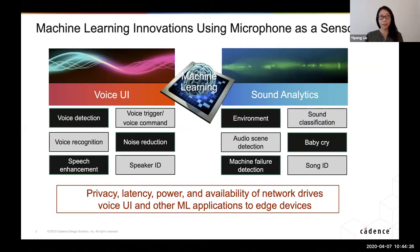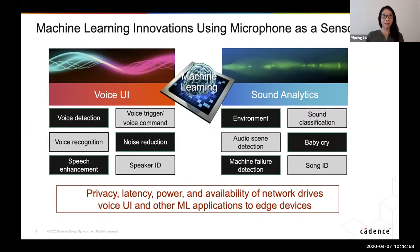When people talk about network availability, the example always used is: if you're driving a car, you may not have a network connection. Recently, something happened that probably impacts all of our lives — the current situation where we're all staying home and trying not to infect each other. One thing found in China was that elevators are a source of infection because people touch the buttons. So there was a rapid development of voice commands to control elevators, and studies found that in most cases, these elevators do not have access to any network.